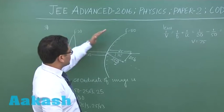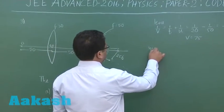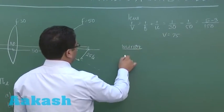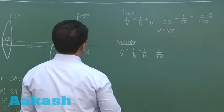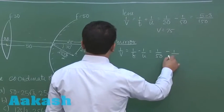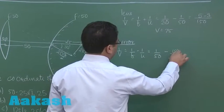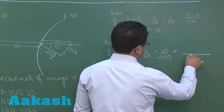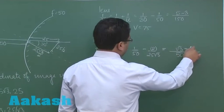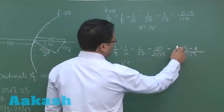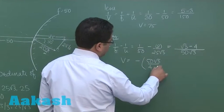Every distance for the convex mirror is measured with respect to its tilted axis. Applying the mirror formula 1/V = 1/F - 1/U, with F = 50 and U = 25√3/2, we get 1/V = 1/50 - 2/(25√3), which simplifies to (√3 - 4)/(50√3). So V = -50√3/(4 - √3), which is negative.